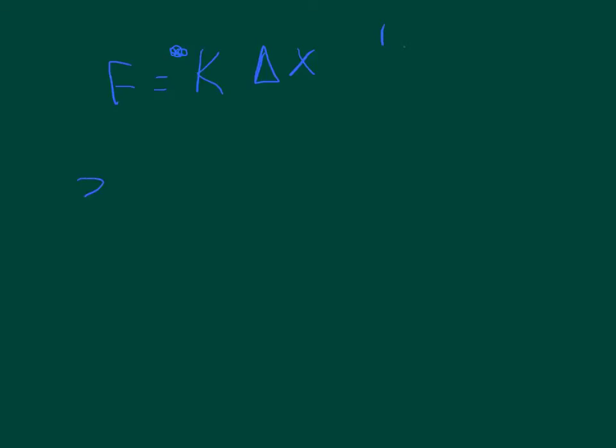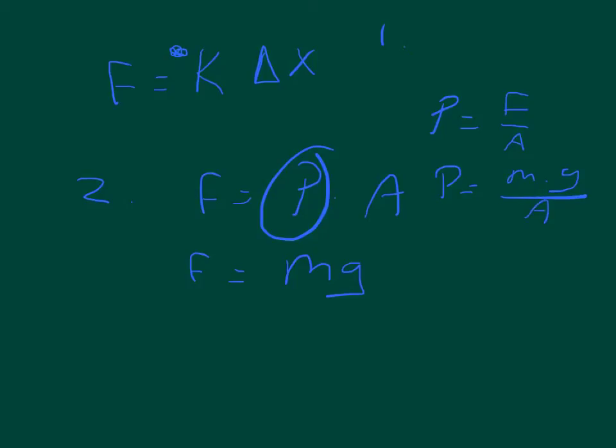The second equation we have a choice. We could say that force equals pressure times area, or we could say that force equals mass times gravity. And here's why you can say either one. Whenever you define pressure, so pressure equals the force divided by the area, and then you said, well, pressure equals mass times gravity divided by area.